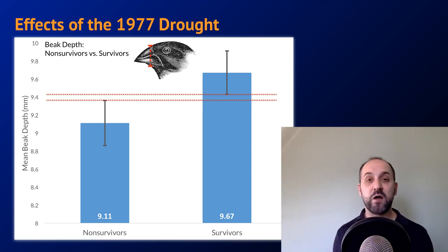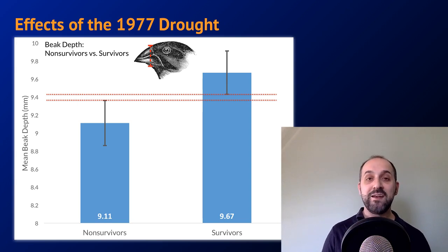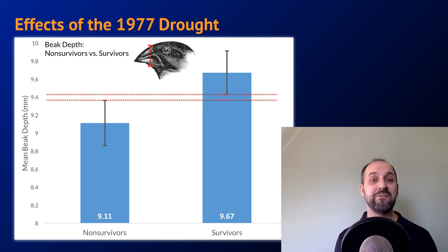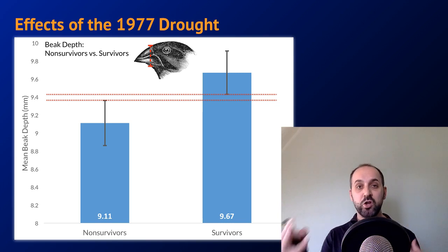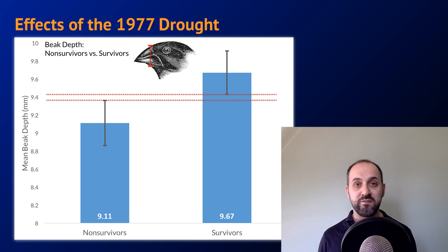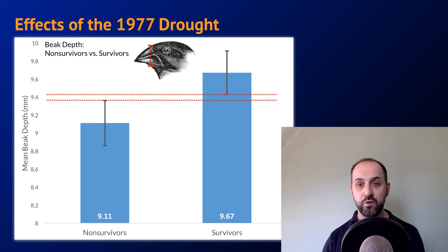There was a drought on the island in 1977, and what the Grants noticed was that the beak depth of the surviving birds was statistically significantly deeper — shifted in a statistically significant way from what the population looked like before the drought. One reason: survivors with deeper beaks were able to eat food not available to survivors with more shallow beaks. So they survived the drought, passed on their genes to their offspring, and we get this shift in the population over the span of just a couple of years. That's another example of natural selection. I encourage you to go out and get at least two more examples, because free response questions are often going to ask you to provide an example.